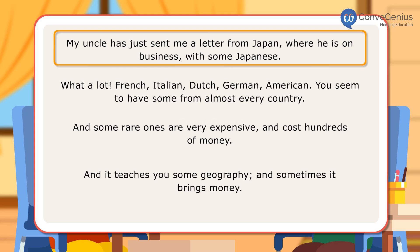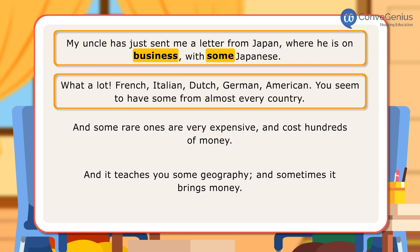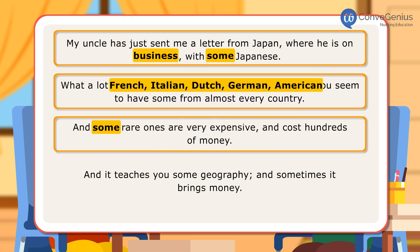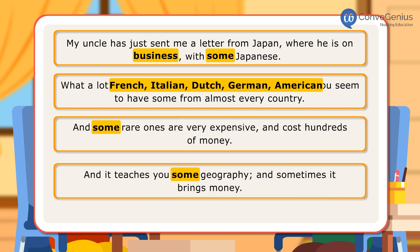In the first sentence, some is used to talk about unknown numbers and zero article is used with abstract noun 'business.' In the second sentence, zero article is used with nouns like names of languages and nationalities — French, Italian, Dutch, German, American. In the third sentence, some is used with plural uncountable nouns. In the last sentence, some is used with 'geography' to talk about particular but unspecified subject knowledge.